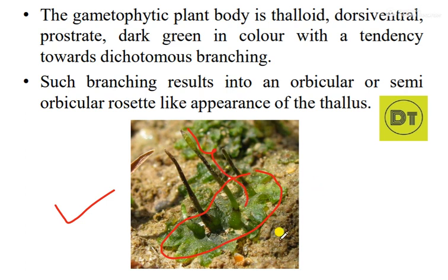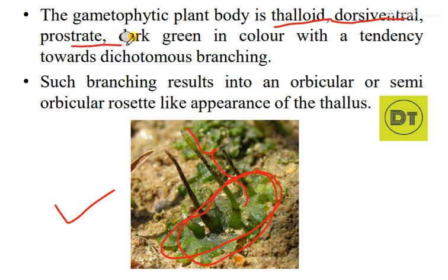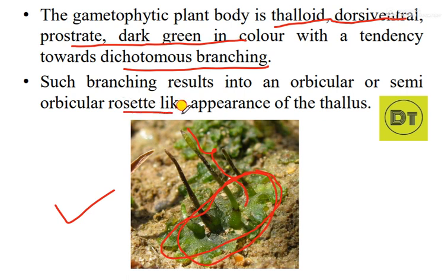This is the complete plant of Anthoceros. The gametophytic plant body — what is this part? It is thalloid, dorsiventral, prostrate, and dark green. And this is the dichotomous branching tendency. If you look at this type of dichotomous branching, it gives a rosette-like appearance.